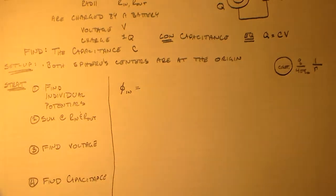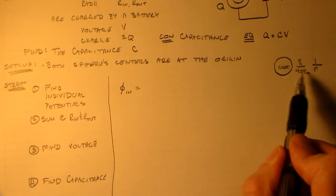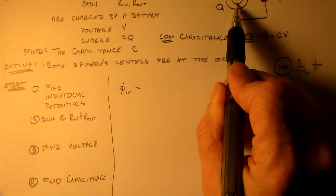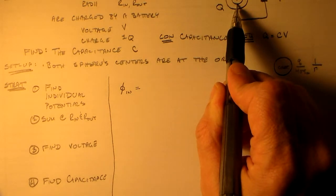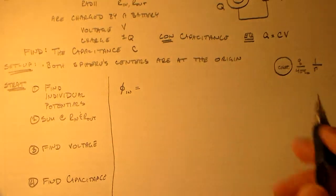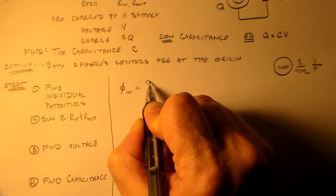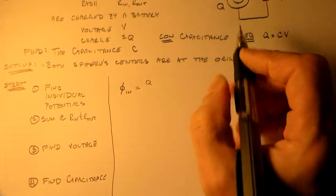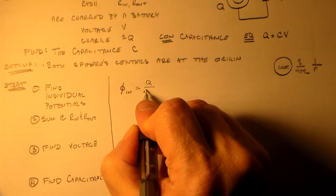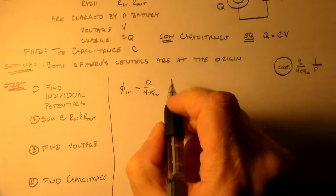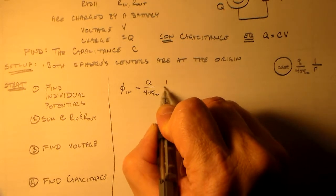So our potential from this guy here, which is from the inner sphere, not from, not on the interior of the sphere, so it's for the inner sphere, is going to be q, because this is positive, over 4 pi epsilon naught, right, times 1 over r.